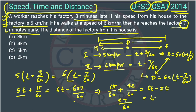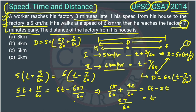The question is asking for the distance, so we substitute T back into the first equation: D = 5 × (57/60 + 3/60) = 5 × (60/60) = 5 × 1 = 5 kilometers. So the answer is option C — 5 kilometers.